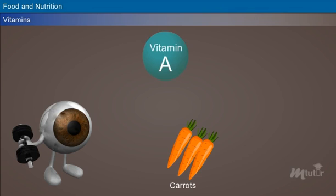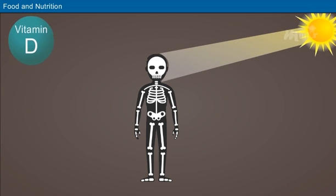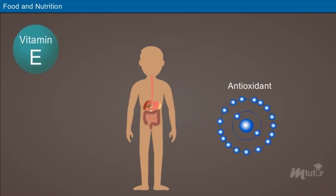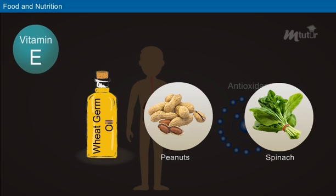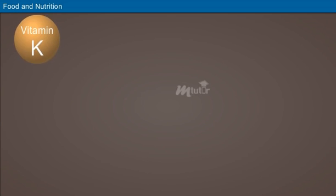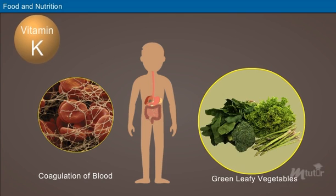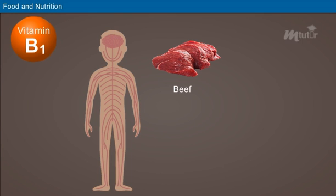Vitamins — Vitamin A: it aids in better vision and is present in carrots and lettuce. Vitamin D: it is required for the formation of bones and teeth; sunlight is the important natural source for vitamin D. Vitamin E: it is highly effective as an antioxidant and is present in wheat germ oil, peanuts, spinach, etc. Vitamin K: it helps in the coagulation of blood and is present in green leafy vegetables.